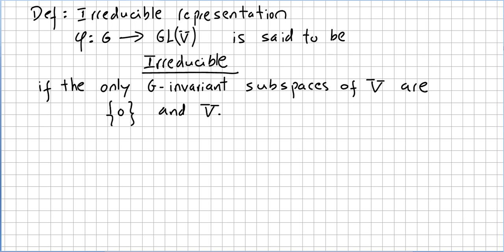This video is on representation theory and we introduce the very important concept of irreducible representation. Let phi be a non-zero representation that takes us from G to the general linear group on the vector space V of a group G. This representation is said to be irreducible if the only G-invariant subspaces of V are the trivial ones.